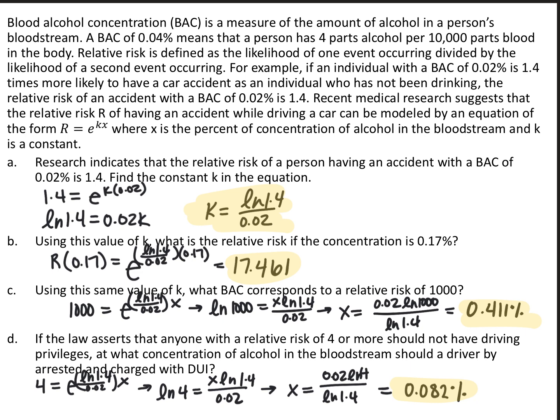The last part is a similar setup: with a relative risk of 4 — since the law says anyone with a relative risk of 4 or more should not be driving — using the same process you end up with approximately 0.082%, which is why the legal limit is 0.08 blood alcohol level. In summary, logarithms are the inverse of exponential functions. The base of the logarithm is the same as the base of the exponential, the output of the exponential is now the input of the logarithm, and the exponent is now the output — because the logarithm is asking what power you need to raise the base to in order to get that value.